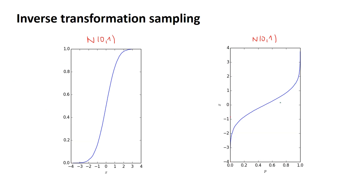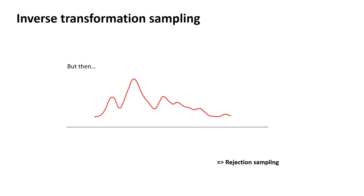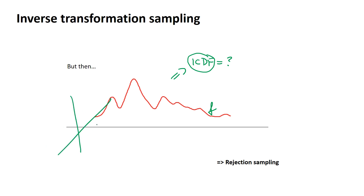But consider something like this: a really ugly probability distribution function. The question is — what is the inverse cumulative distribution function for it? Because I need it to obtain samples. The answer is: I don't know, and it may be quite difficult to obtain. And if we go to 3D or 4D, what does the quantile function look like then? Even more question marks. This is a great example of where rejection sampling comes to the rescue.